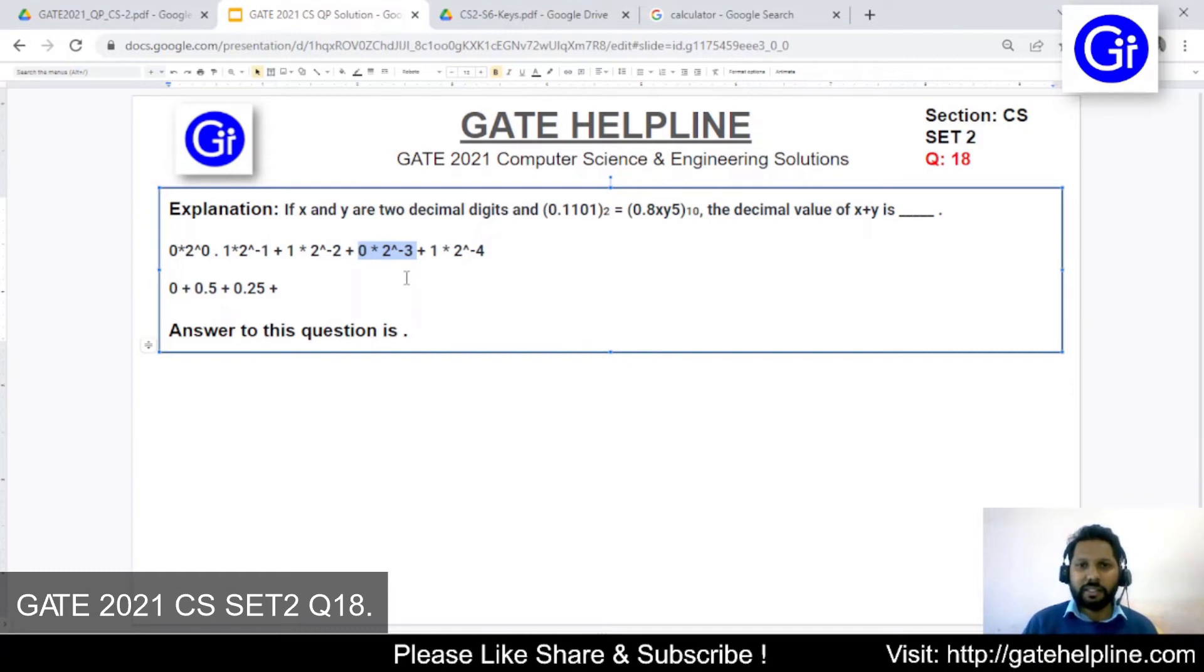Then plus, next value is 0 multiplied by 2 raised to power minus 3. Since 0 multiplied by anything is 0, we won't calculate it. We will come to the next.